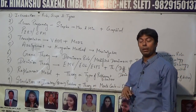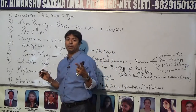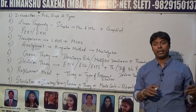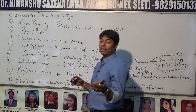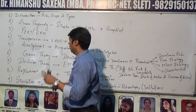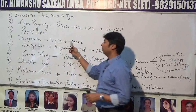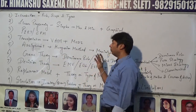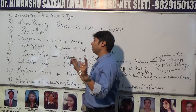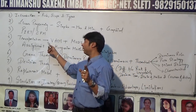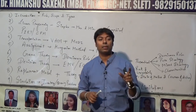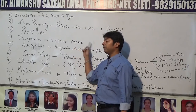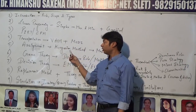Then PERT and CPM, followed by the transportation model. Among the many methods — Northwest Corner, Least Cost, Vogel's, Stepping Stone, Modified Distribution — the best combination is Vogel's Approximation Method to find the initial cost, and Modified Distribution method to optimize and achieve the final cost.